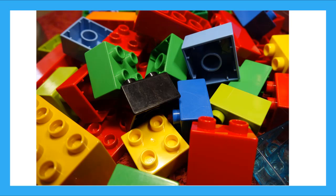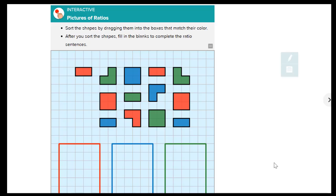Let's do it together using a game made by CK12. Here we are in the CK12 interactive game, and the directions are up here. They say sort the shapes by dragging them into the boxes that match their color. And after you sort the shapes, fill in the blanks to complete the ratio sentences. So let's get started here.